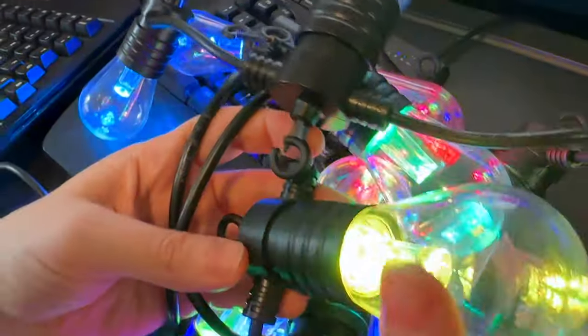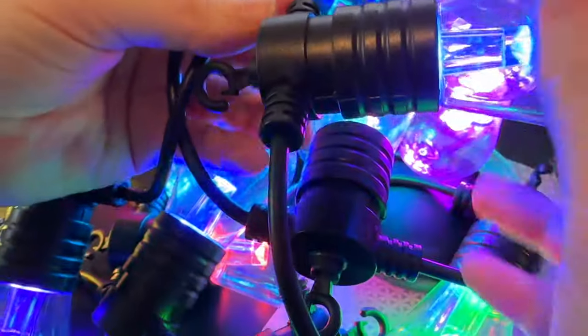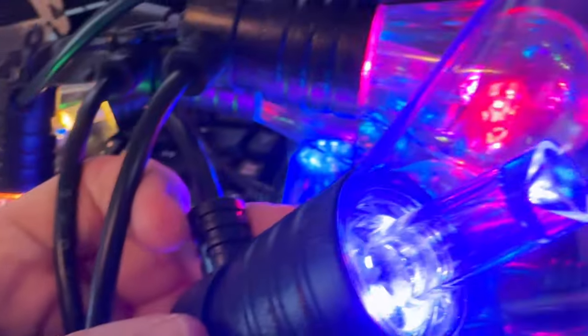These are cafe lights. They're plastic, weatherproof neopixels. And if you look, there's actually three neopixels inside each one. So they're not super bright, but they're good for decorative lighting.